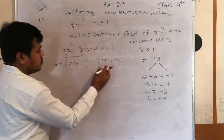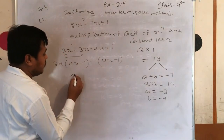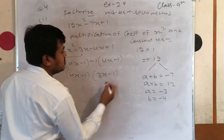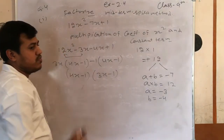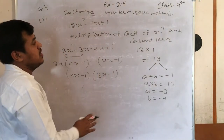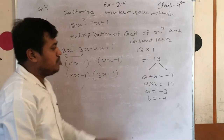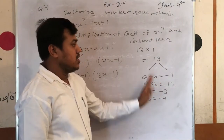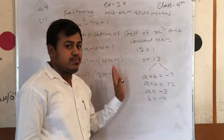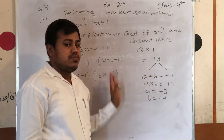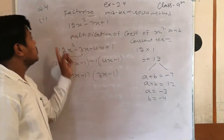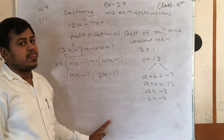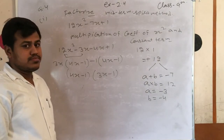The factored form is (4x minus 1) and (3x minus 1). This is a very simple question. Here there is a sign of minus 1. If you don't understand, you can see the video or you can ask me.